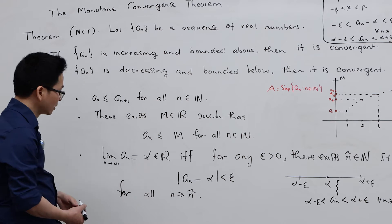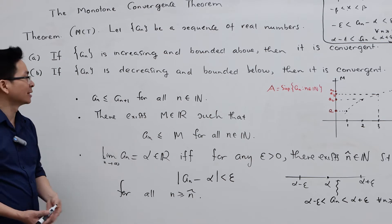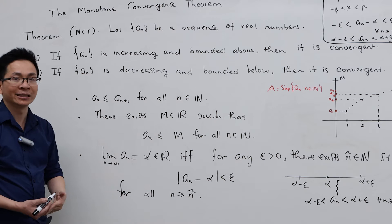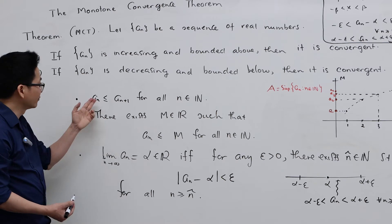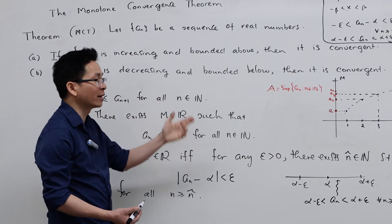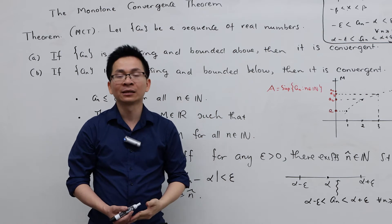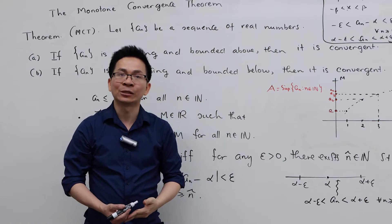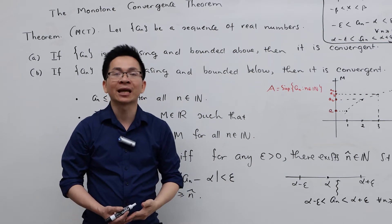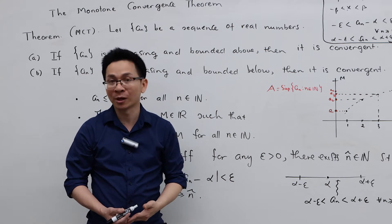So what does it mean for aₙ to be increasing? A sequence aₙ is increasing if aₙ ≤ aₙ₊₁ for all n in ℕ. That means a₁ ≤ a₂, a₂ ≤ a₃, and so on.